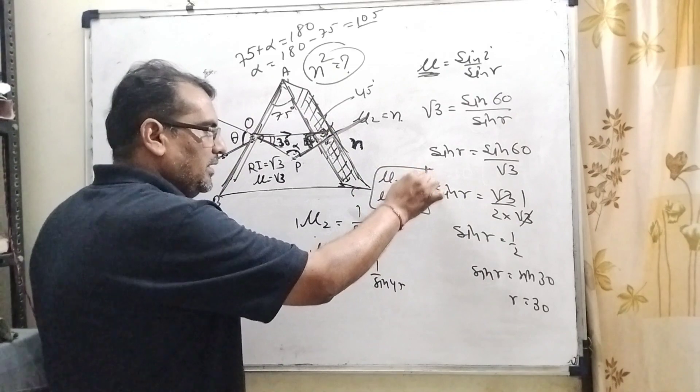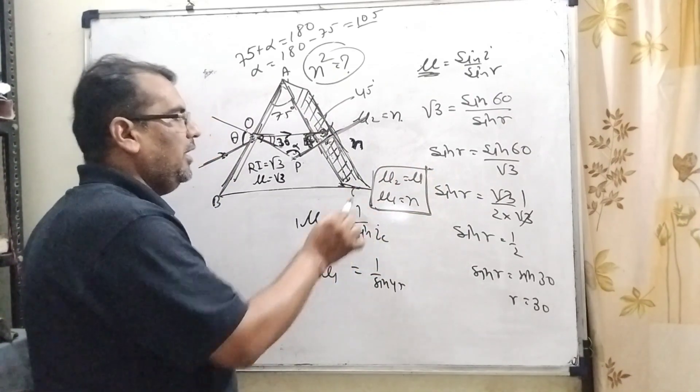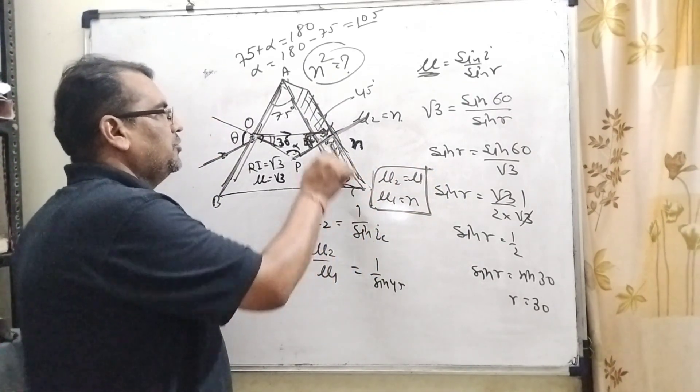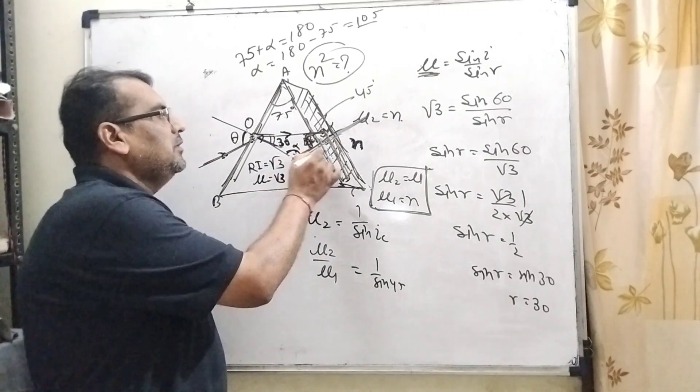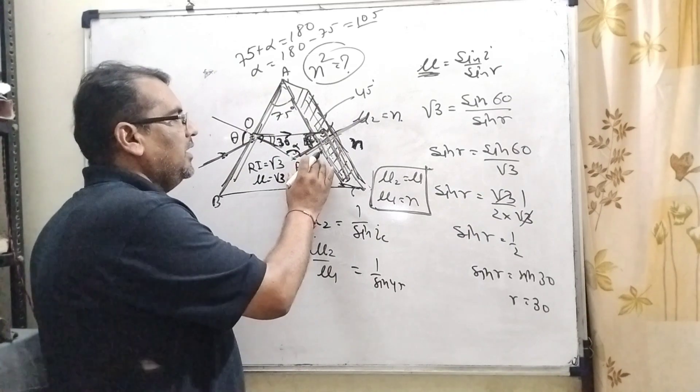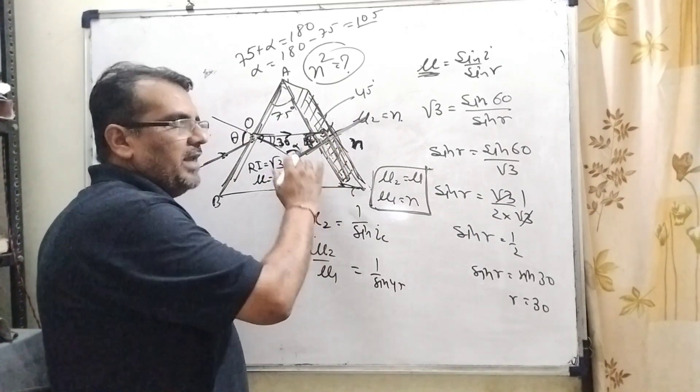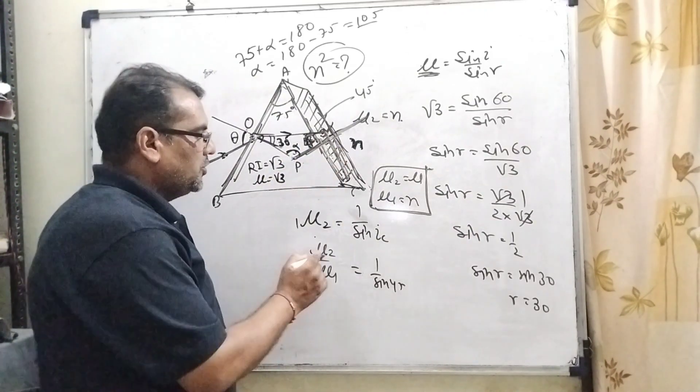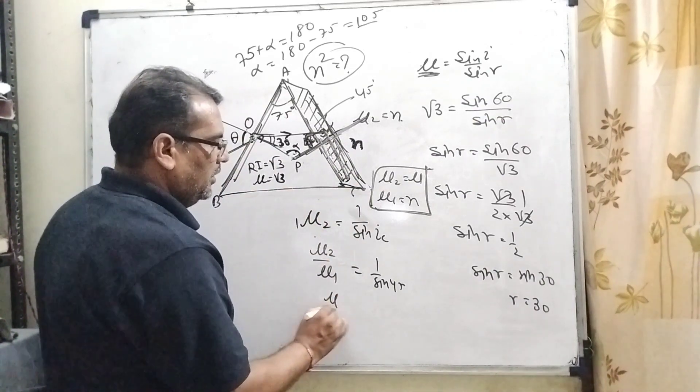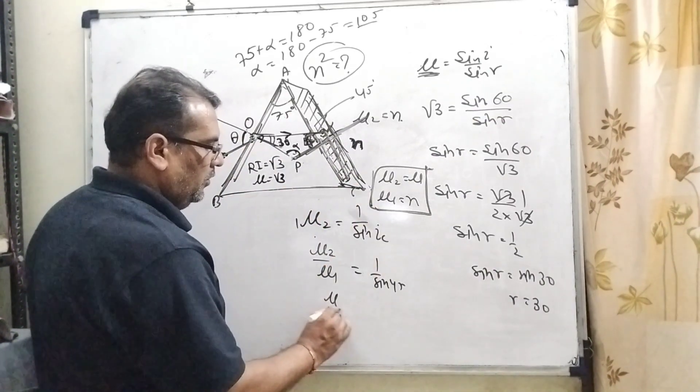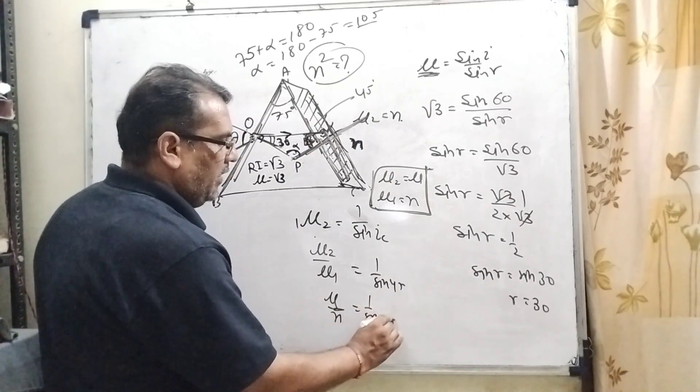So this phenomena is very important and here you have to be careful which concept to apply. This is always ray incident from denser to rarer. So here now substitute this value: mu 2 is mu and mu 1 is n. So 1 upon sin 45.